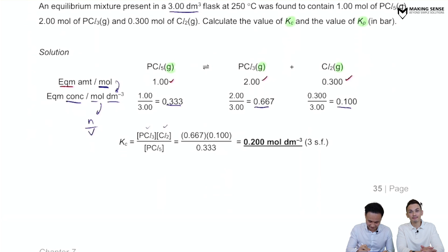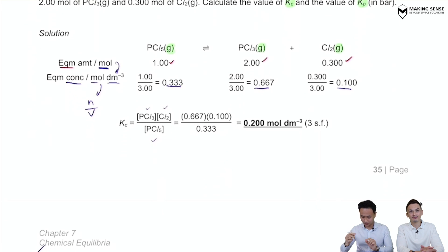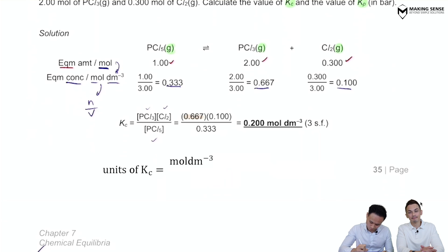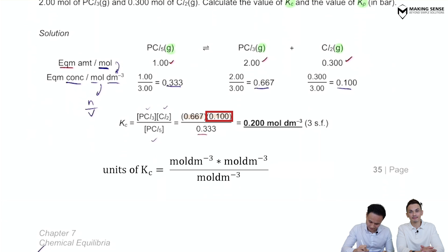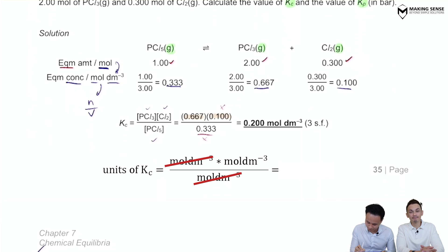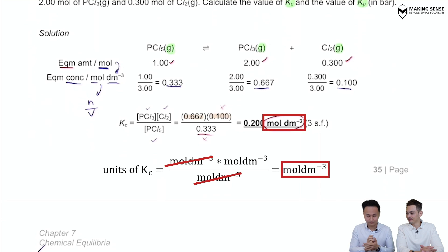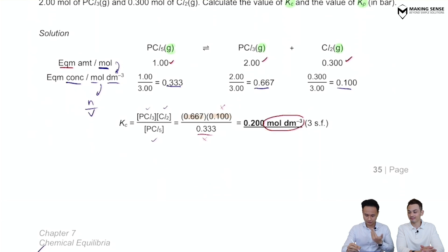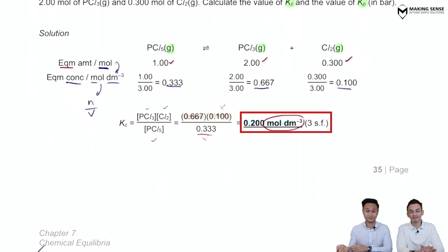Looking at the units — mol per dm³ times mol per dm³ divided by mol per dm³ — one mol per dm³ cancels, leaving units of mol per dm³. The resulting Kc is 0.2 mol per dm³ to 3 significant figures.